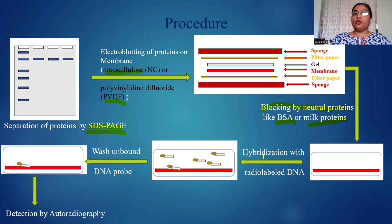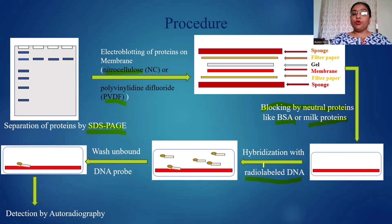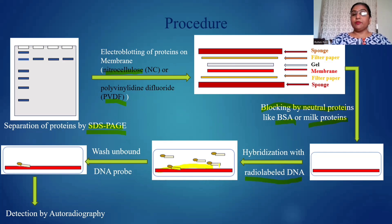After blotting, you are going to add the radiolabeled DNA. The probes that you are going to add are radiolabeled DNA, and this radiolabeled DNA is allowed to hybridize with the proteins which are now present over this membrane. Those proteins are now allowed to interact with the radiolabeled DNA — that is, with the probes — and the probes here are DNA.